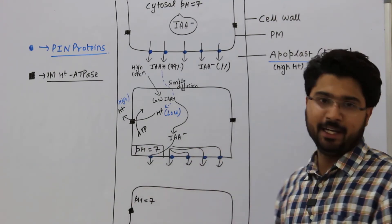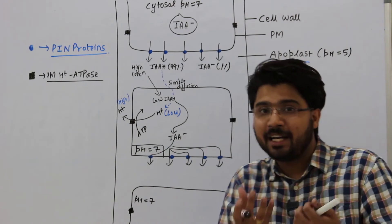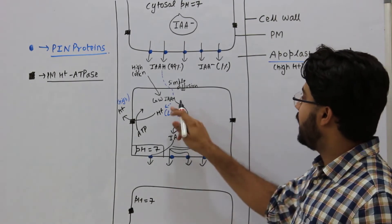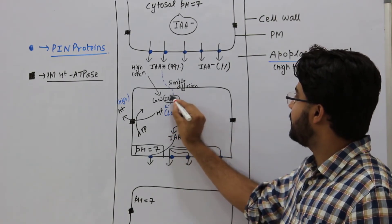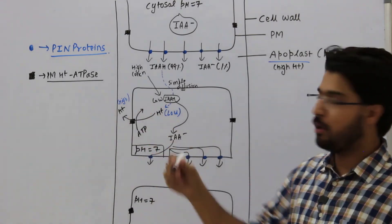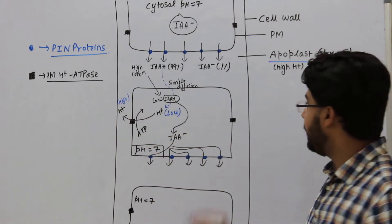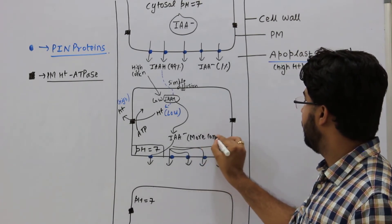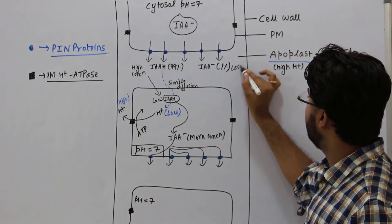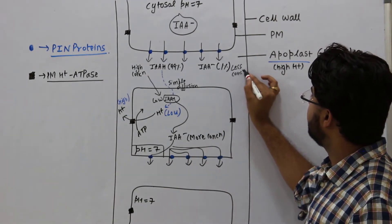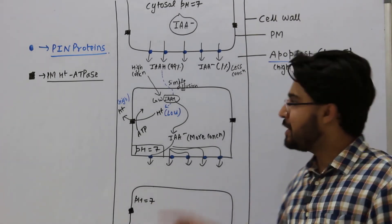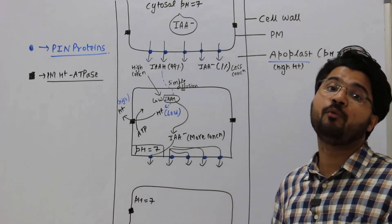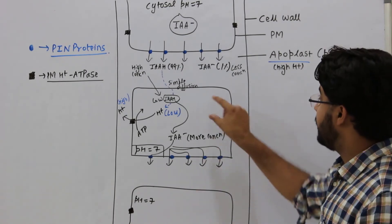Once IAAH enters the cell, the cytosol environment is pH 7 — low H⁺ concentration. The plasma membrane H⁺-ATPase extracts protons, so IAAH is converted back into IAA⁻. Therefore, the cytosol is always full of IAA⁻ at high concentration, while outside (apoplast) IAA⁻ is at low concentration.